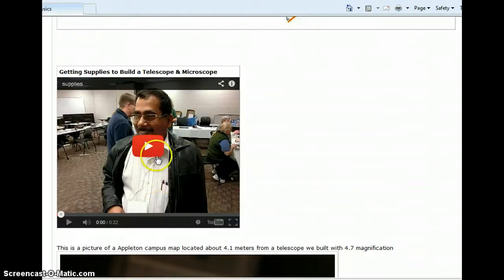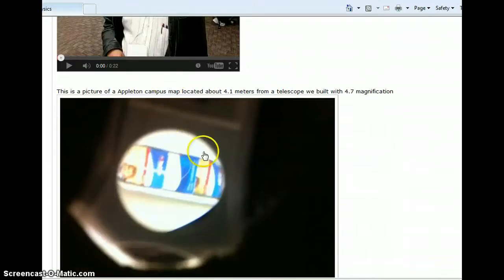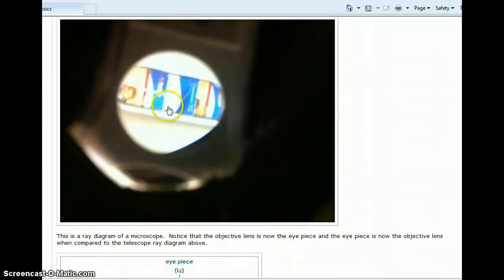Moving on, this is a short video you can watch that shows how we got our supplies. This is a video with your telescope. This was really cool. This is a pamphlet that was outside and it was 4.10 meters away. Very cool. And what magnification was this? This was 4.7.